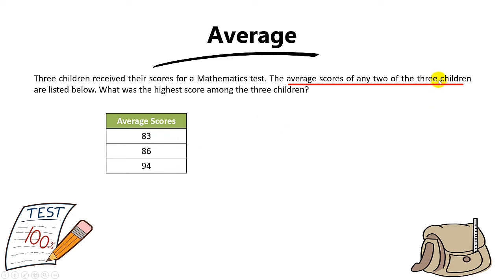The reason is because when there are three children, let's call them A, B, and C. So 83 will be the average of student A and student B, 86 will be the average of student A and student C, and 94 will be the average of student B and student C. That's why you see three numbers.